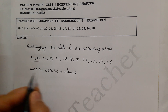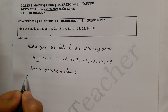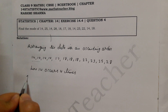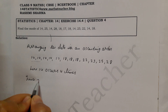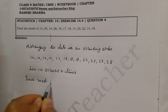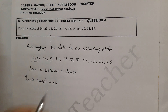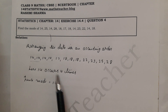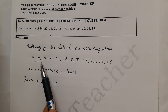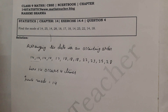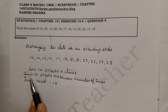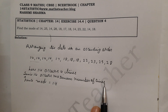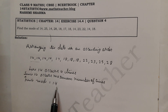So you write here: '14 occurs 4 times, hence mode equals 14.' Why is 14 our mode? Because 14 has appeared the maximum number of times. One clear line: since 14 occurs the maximum number of times, hence mode is equal to 14.